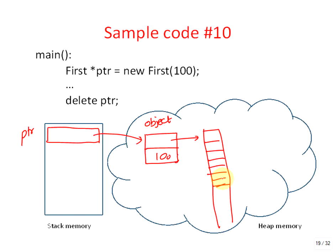When we delete PTR, it basically tries to delete whatever it points to. It realizes it is the object, so it goes ahead and invokes the destructor for that object first. The extension is deleted first, then the object itself is deleted. Both are taken care of.